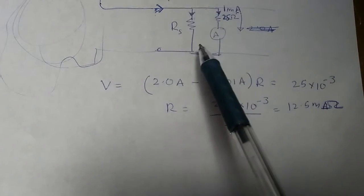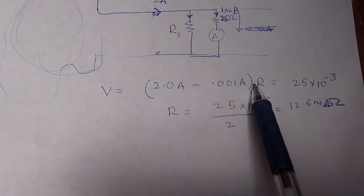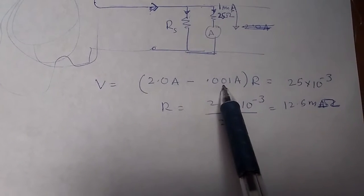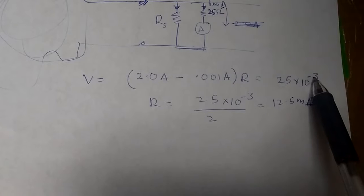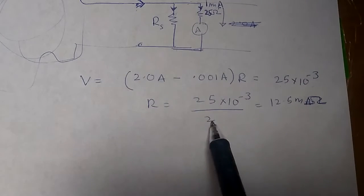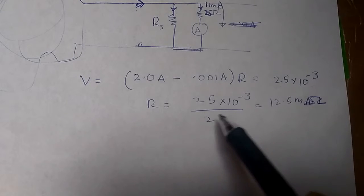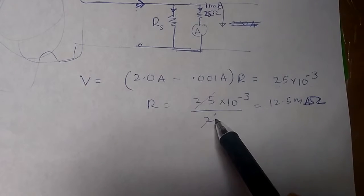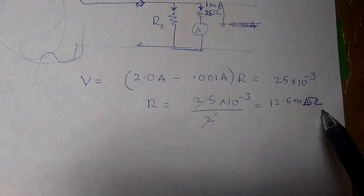The voltage across the shunt resistor RS is going to be V = I × R. Since 2 minus 0.001 is roughly equal to 2, we have RS = 25 × 10 to the power minus 3 divided by 2, which is going to be 12.5 × 10 to the power minus 3 ohm, or 12.5 milli-ohm.